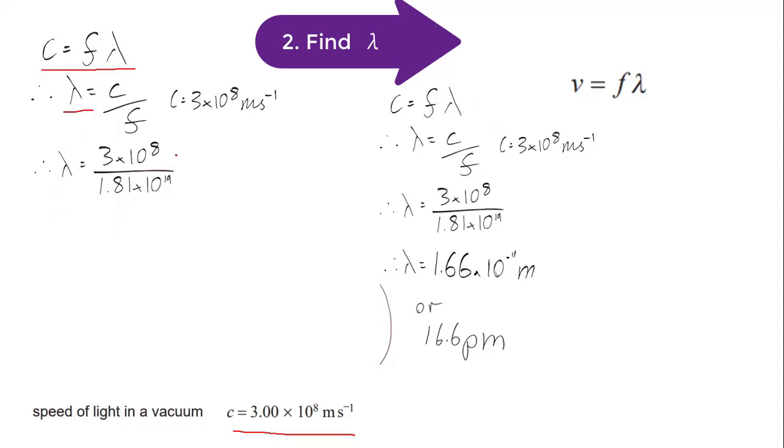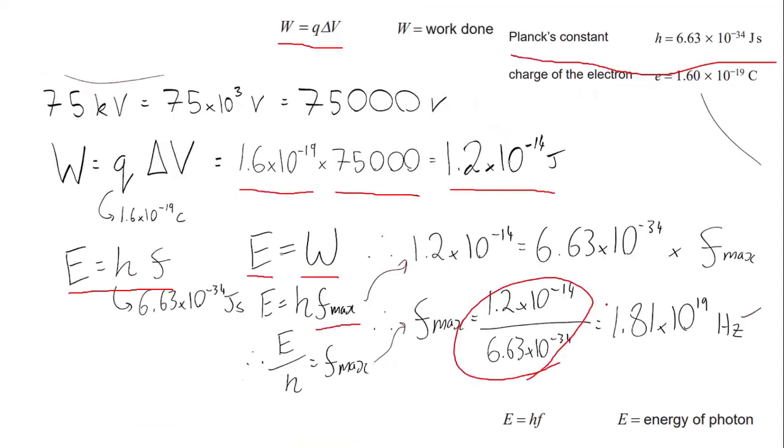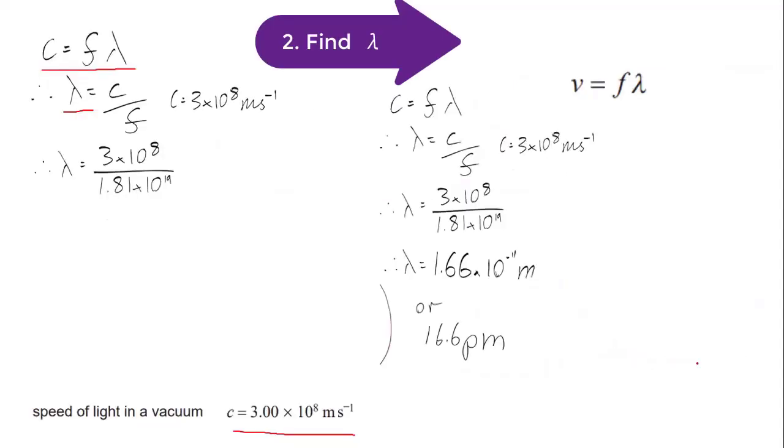So we've got 3 by 10 to the 8, divide 1.81 by 10 to the 19, which is our answer from the previous slide, and you're going to end up with the amount, which is 1.66 by 10 to the negative 11 meters. However, if you have a look at orders of magnitude, you'll see that 10 to the negative 12 is pico, so you could actually represent it as 16.6 picometers. However, this answer here is perfectly acceptable to get full points.